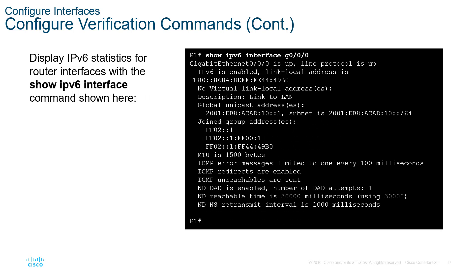Again, there is an IPv6 equivalent. Show IPv6 interface will show you if the interface is up or down, any multicast groups associated with it, and then the rest will be protocols.